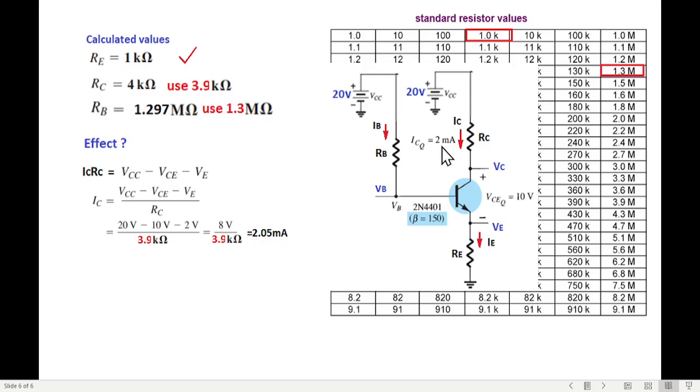This is the formula we studied earlier. Here, instead of 4 kilo, we'll use 3.9 kilo for RC. So our IC becomes 2.05 milliampere. So instead of 2 milliampere, actual IC will be 2.05 mA. This variation is within our acceptable limit, so we can easily use these parameters.